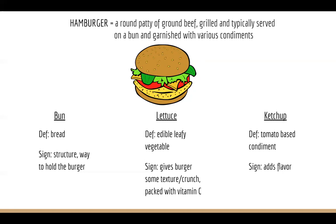The next term is lettuce. Definition: it is an edible leafy vegetable. In relation to the hamburger, its significance is that it gives your burger some texture and some crunch. Lettuce is also packed with vitamin C, so it can give you that dose of vitamin C that you need. And then our last term, ketchup. Basic definition: it is a tomato-based condiment. Its significance is that it adds flavor to our burger.